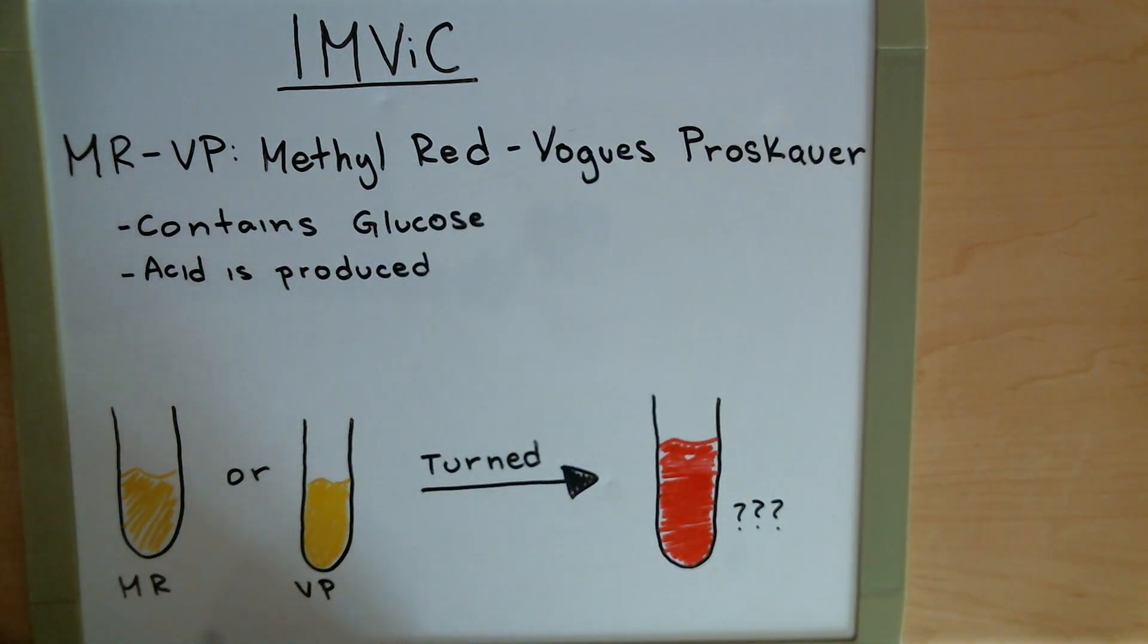We'll inoculate our bacteria into the broth, let it incubate, pull it out. Afterwards, we're going to split that broth into two test tubes, add MR reagents to one, VP reagents to another. And we're going to see which one of these two test tubes turns red.